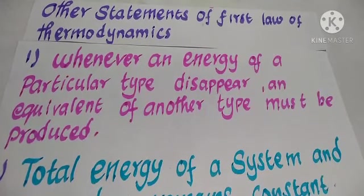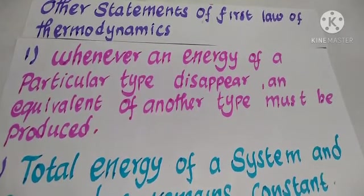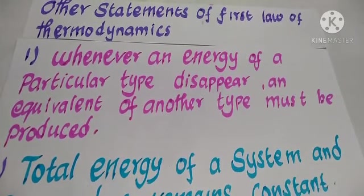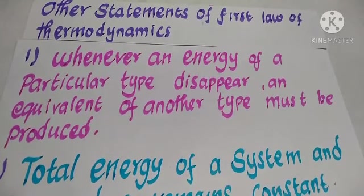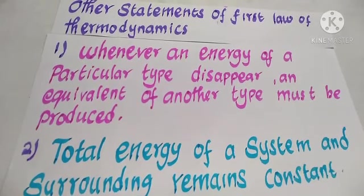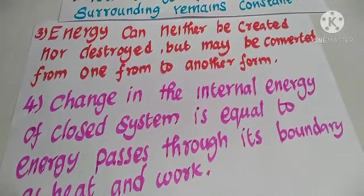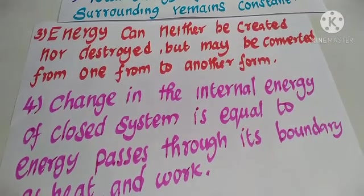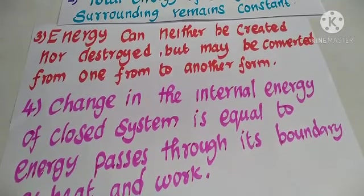Another statement of the first law of thermodynamics: whenever energy of a particular type disappears, an equivalent amount of another type must be produced. The total energy of the system and surroundings remains constant. Energy can neither be created nor destroyed, but may be converted from one form to another form.